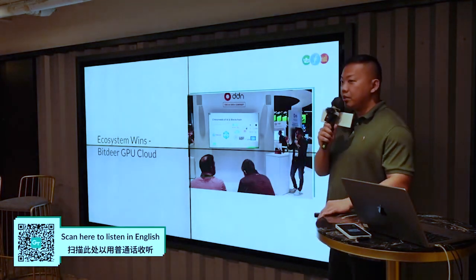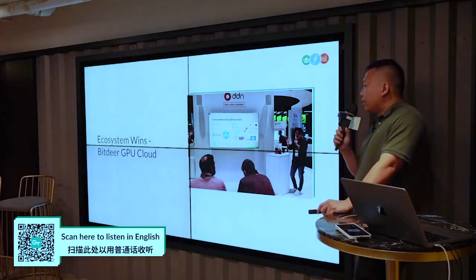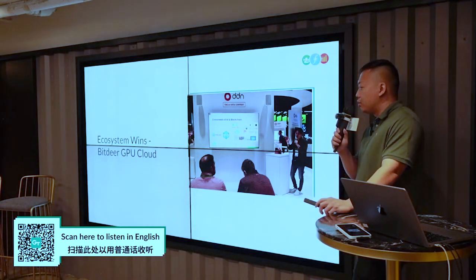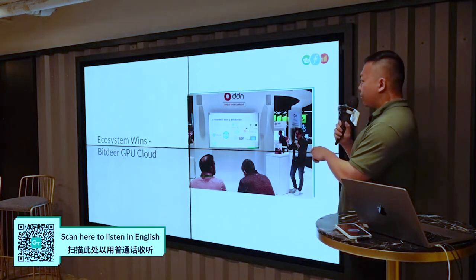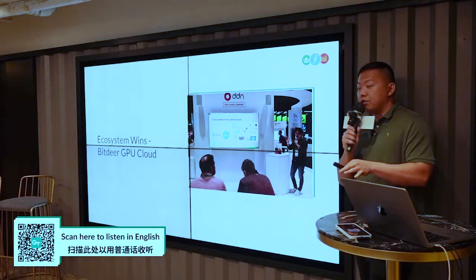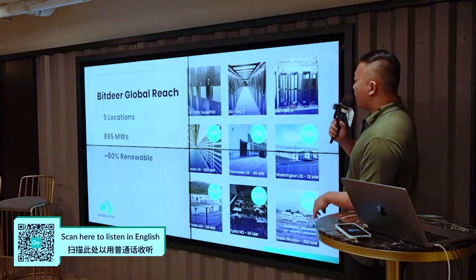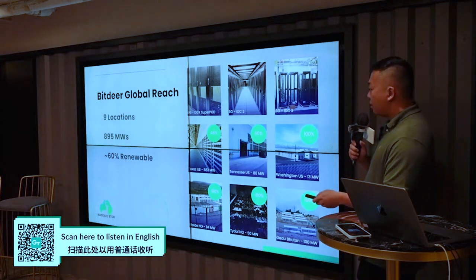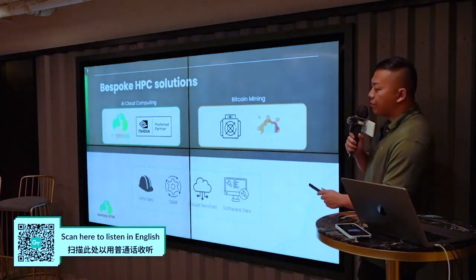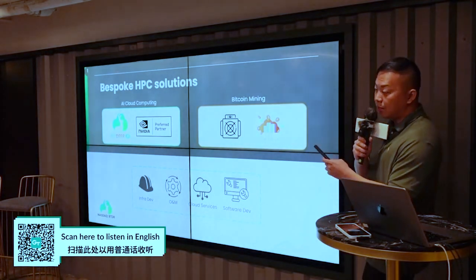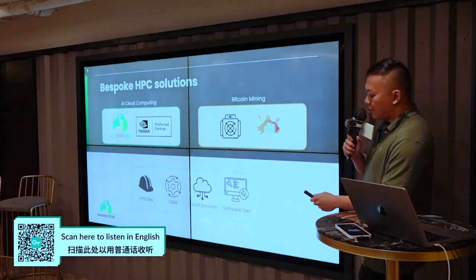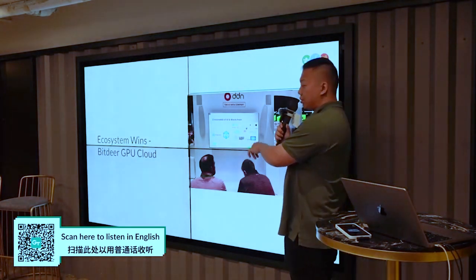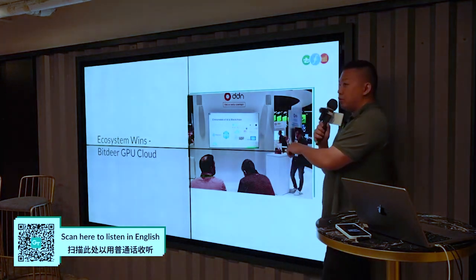I'm going to talk about some ecosystem wins. Bitdeer, one of our ecosystem partners, has created a GPU cloud where most of the data will be stored on Filecoin. They are building a pipeline to ensure that data flows into Filecoin to create an audit trail for immutability. They have a global reach with data centers in Singapore and the US, and are expanding further. Notably, they are Nvidia preferred partners, and during the GTC event last month, they actually shared Filecoin at one of their side events — this picture shows them presenting about Filecoin.